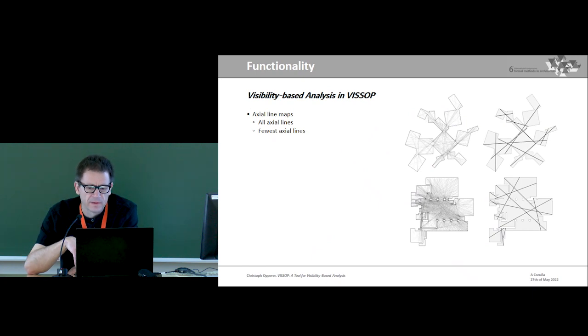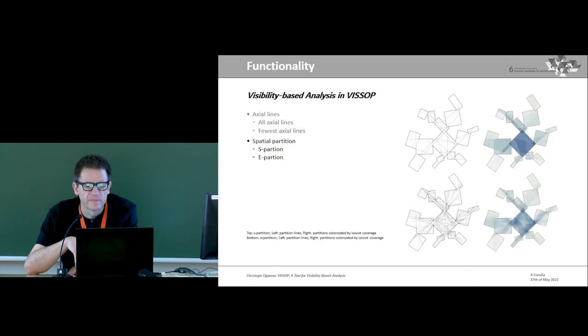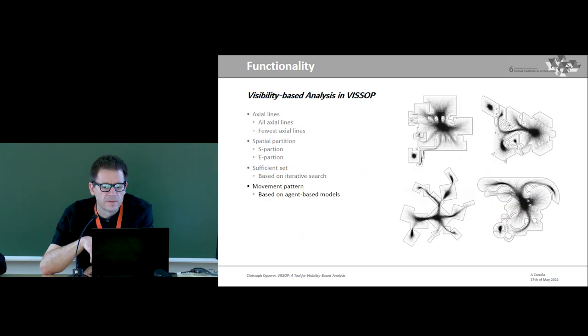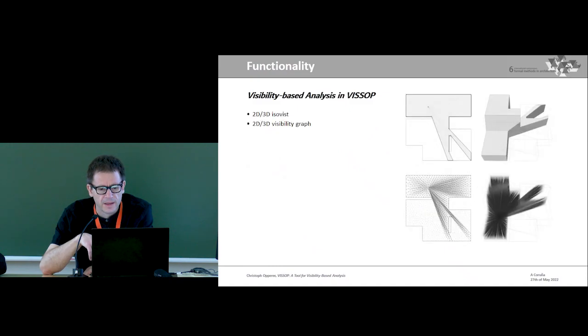Of course, it can compute axial line maps. It can generate spatial partitions based on Peponi's definitions of S and E spaces. It's very much related to the art gallery problem. It can simulate and analyze a number of different movement patterns based on agent-based models and various measures. But the focus on the core functionality of VisApp is, however, on the two- and three-dimensional ISOVIST and visibility graph analysis.